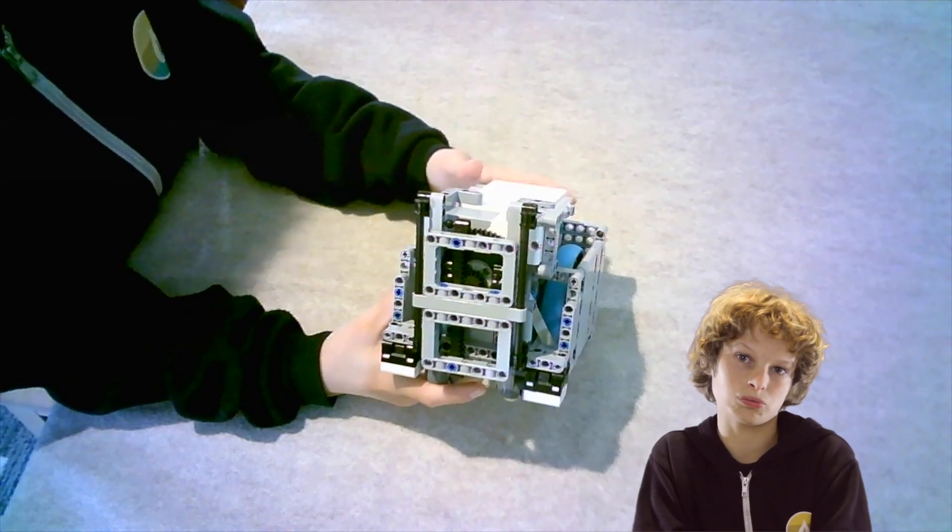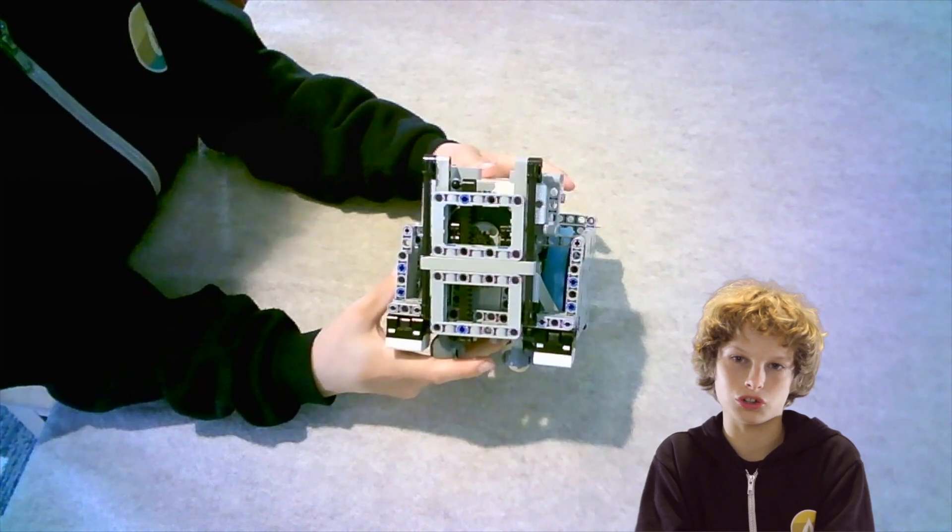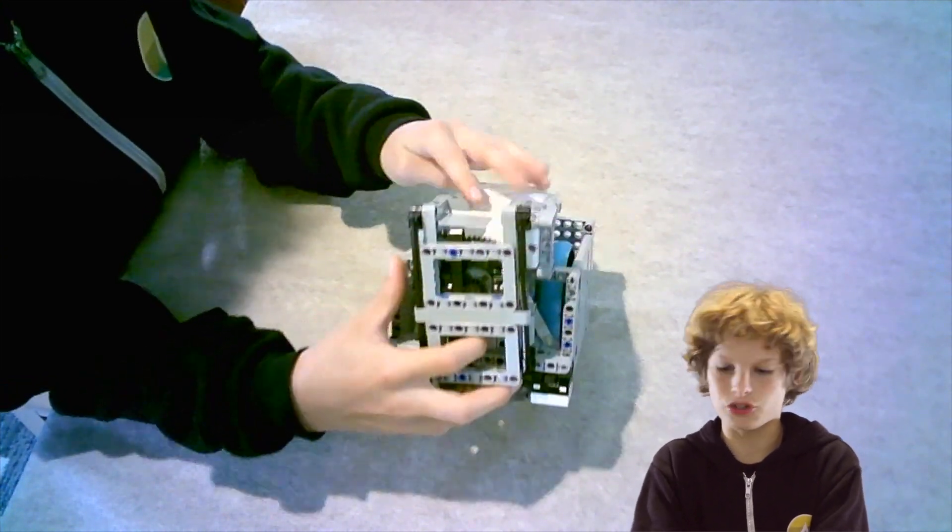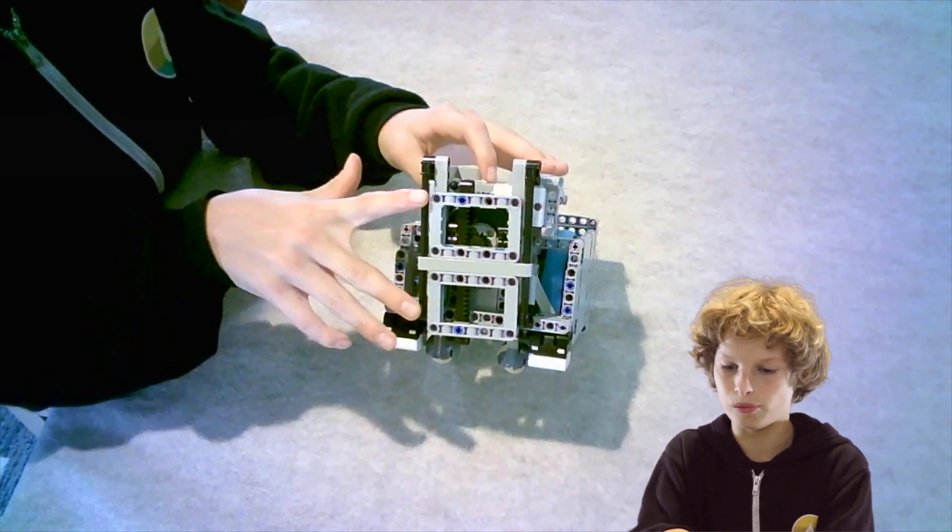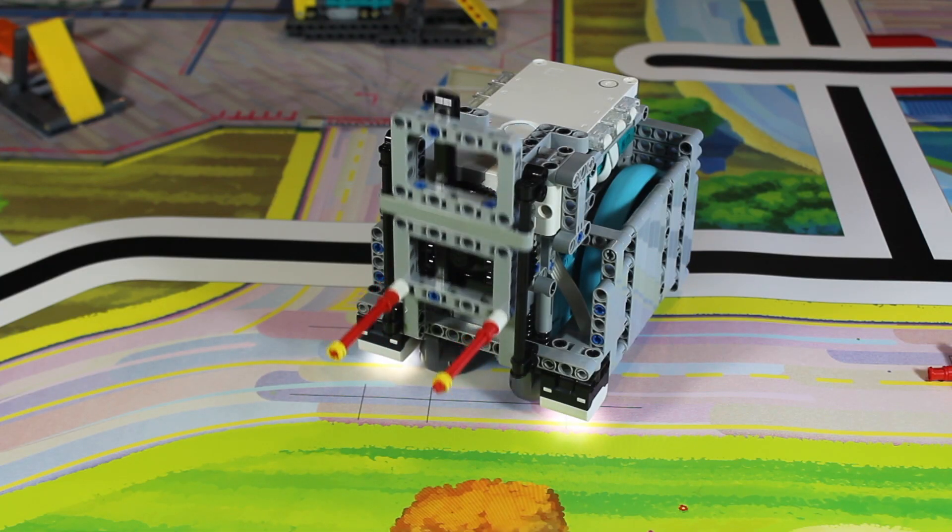A unique feature on our robot is our forklift mounted on a turntable. They are powered by two medium motors that allow our forklifts to move up nine studs and down nine studs.